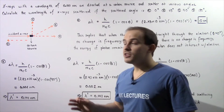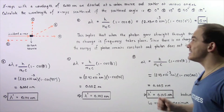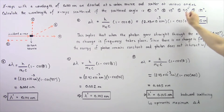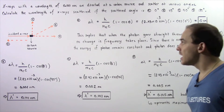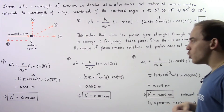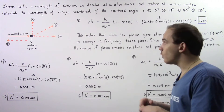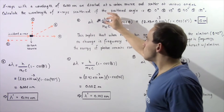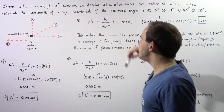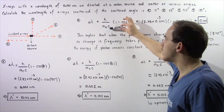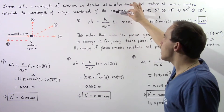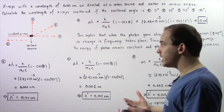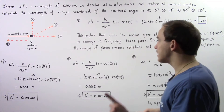We want to calculate the wavelength of the scattered x-rays if the scattered angle is: (a) 0 degrees, (b) 45 degrees, (c) 90 degrees, and (d) 180 degrees. To calculate the Compton Shift — the change in wavelength — we use the following equation discussed in the previous lecture. The increase in wavelength equals h divided by the mass of the electron multiplied by the speed of light, multiplied by 1 minus cosine of the angle phi, where phi is the angle between the horizontal axis and the scattered x-ray.